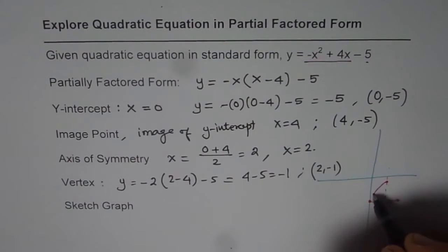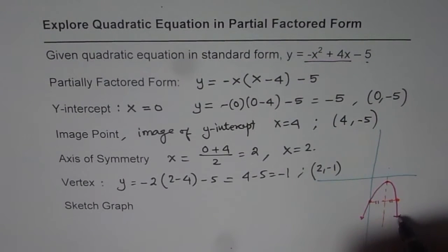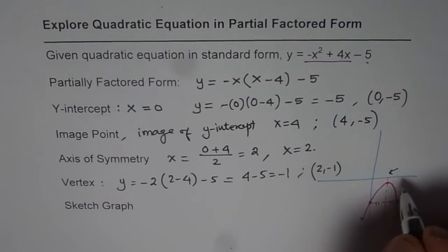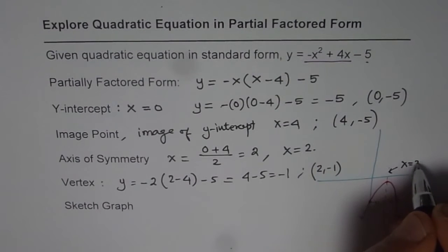Joining these, we get our parabola which represents the equation. Now here, this line is the axis of symmetry, which in our case is x equals 2. So this point is 2 for us.